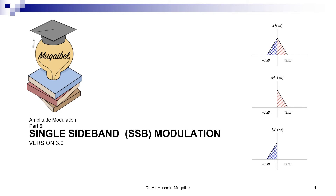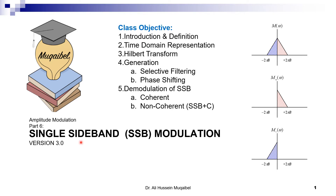This is Dr. Alim Gable, and welcome again to single sideband modulation — this is part six of amplitude modulation. In this lecture we will cover the following objectives: a quick introduction to single sideband, time domain and frequency domain representation, and the Hilbert transform. In part two we will look at generation using selective filtering or phase shifting, and demodulation using coherent or non-coherent detection.